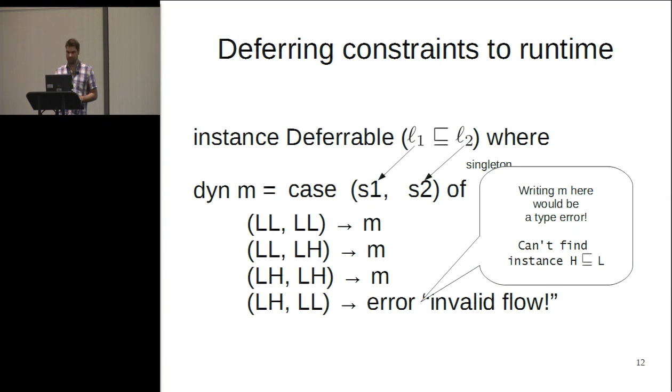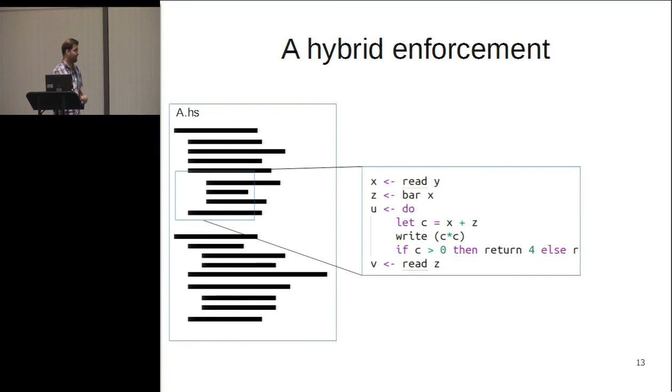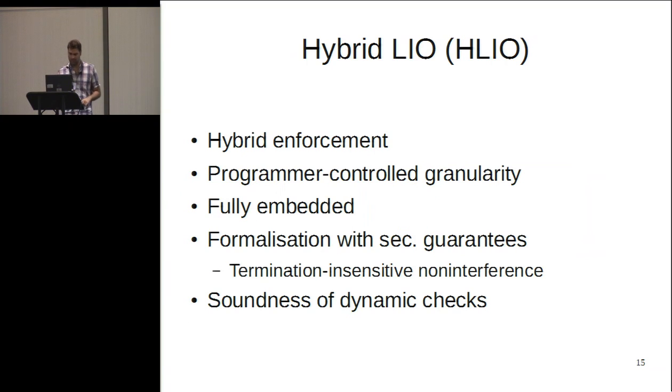Using this dyn operation, we basically get something we call hybrid enforcement. Consider an arbitrary piece of code involving reads and writes. The idea here is that you can take your code and just add dyn wherever you want, and this means the following block of code is going to be dynamically checked in its type class constraint.